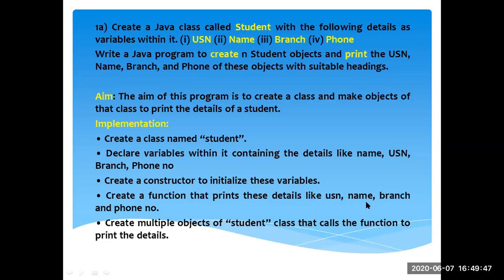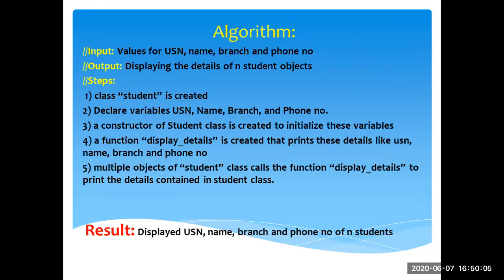Create a function that prints the details — USN, name, branch, and phone. Since you need multiple objects, create an array of Student objects. There are two functions: one to insert the record (USN, name, branch, phone) and one to display the student information. Input is USN, name, branch, and phone number; output displays the details of N students.